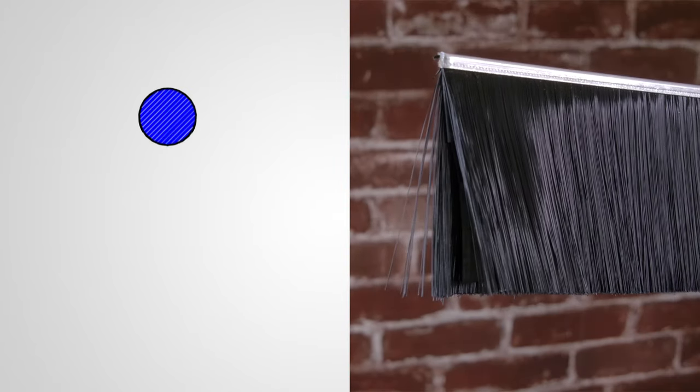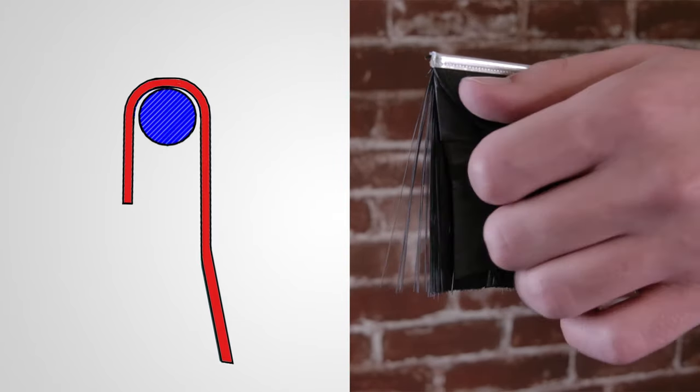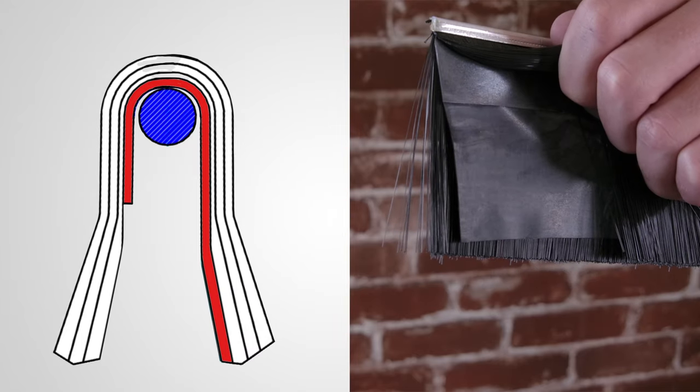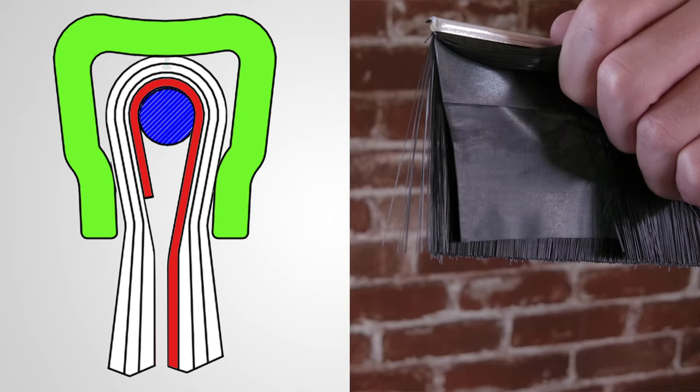Weather block brush seal has the same construction as standard brush seal but has a durable EPDM strip sandwiched between the bristles. This takes advantage of the flexibility of the bristles and the impenetrable seal provided by the EPDM strip.